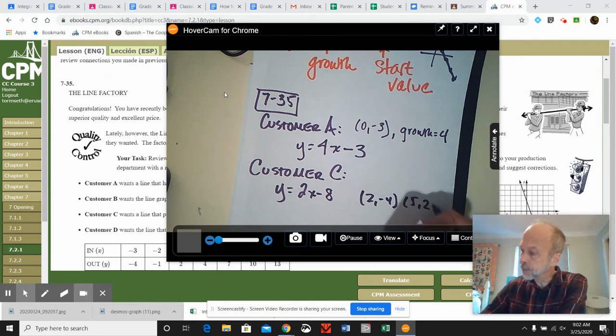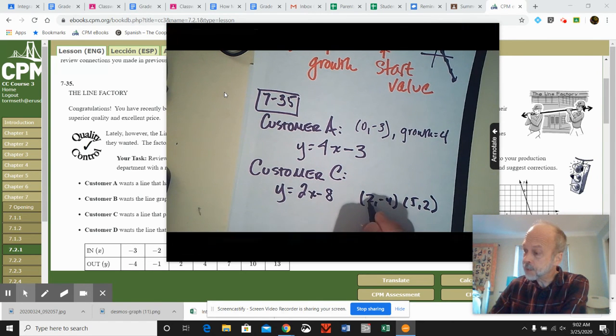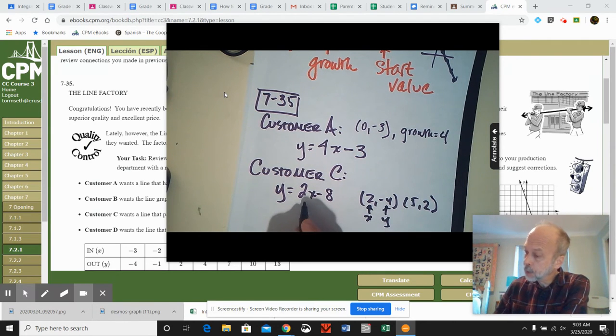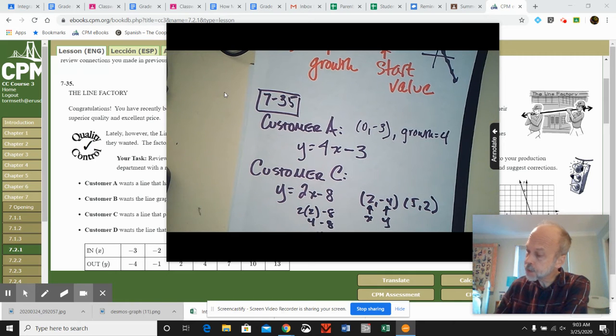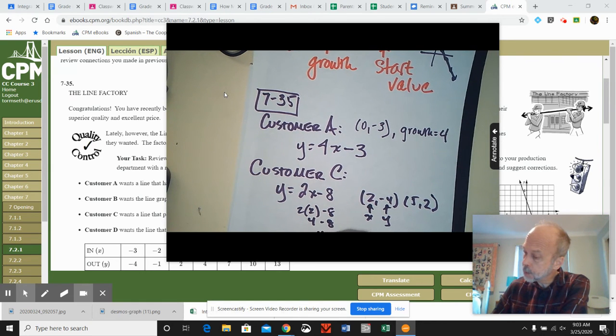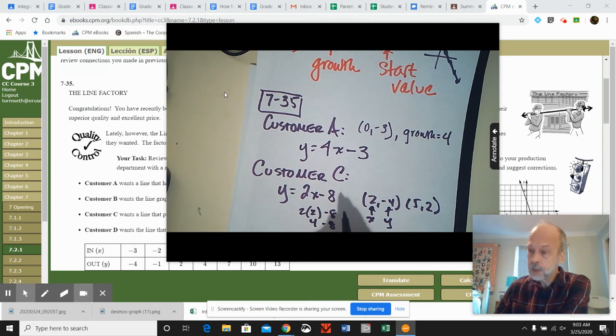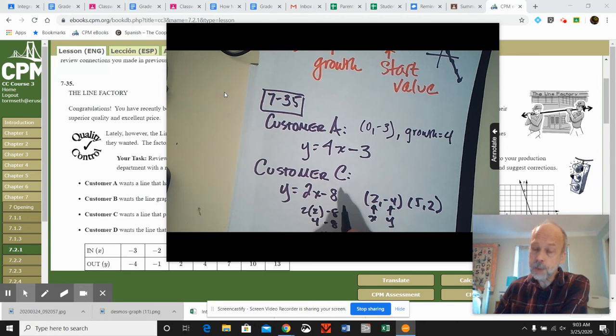So here to see if they've given the correct order, it's really about substituting these values. Our x value of 2 should give us a y value of negative 4. So 2 times 2 is 4, minus the 8 is negative 4. That's correct. And then we also need to check the 5 and the 2. So 2 times 5 is 10, minus the 8 is 2. So that's also correct. So this is an example of an order that is correct.